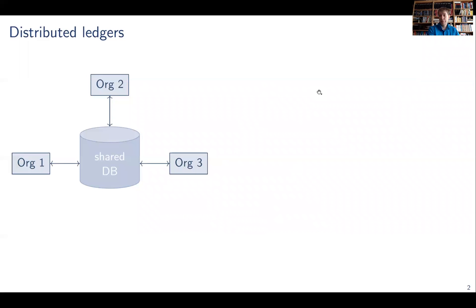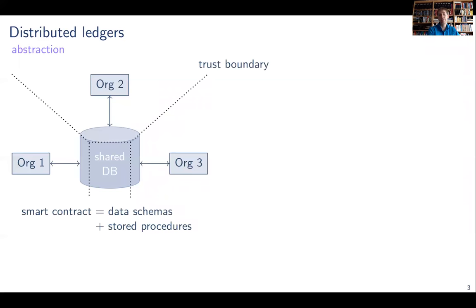This is about distributed ledgers and in our view the main business value of distributed ledgers is that they provide a nice abstraction for multiple organizations to run a shared database. Unlike ordinary shared databases, a distributed ledger allows that trust boundaries run through the database. Organization one could keep some of its data private, like internal calculations, authors and the like, and yet share data with other organizations like mutual purchase agreements, contracts and the like, and yet have their applications operate seamlessly over those two kinds of data.